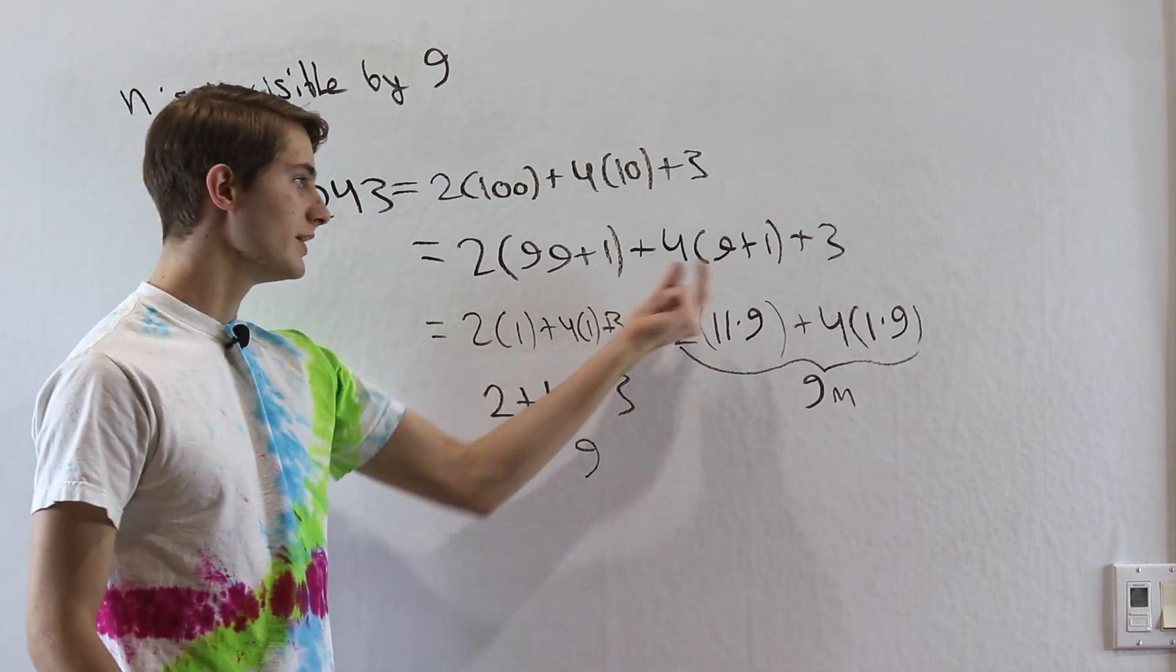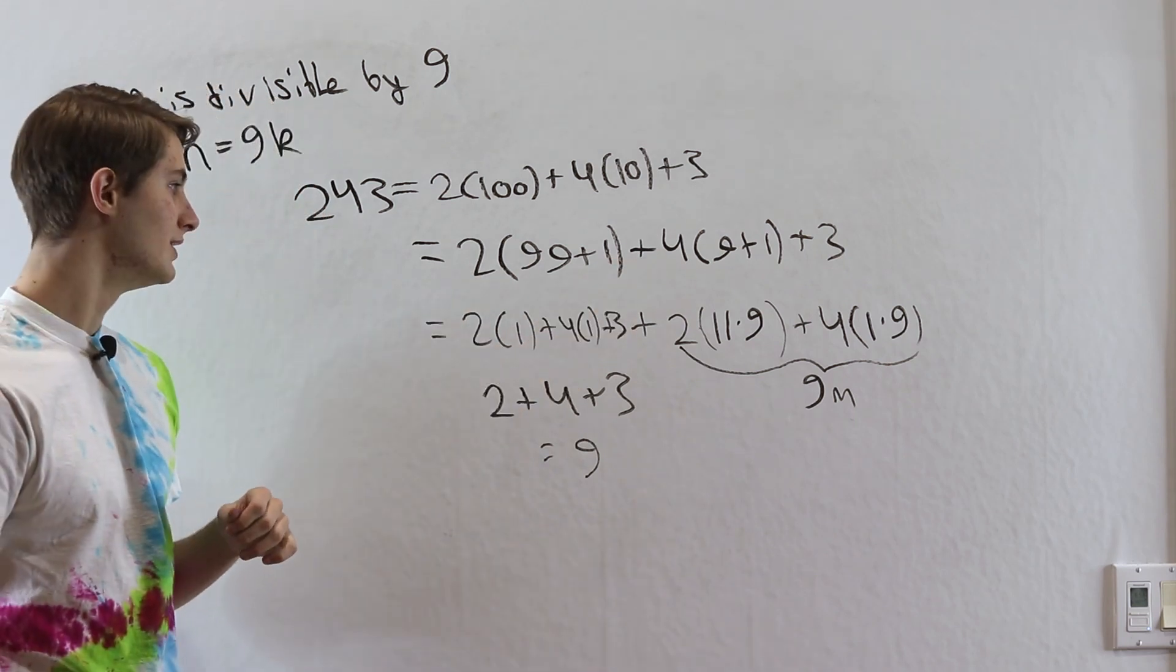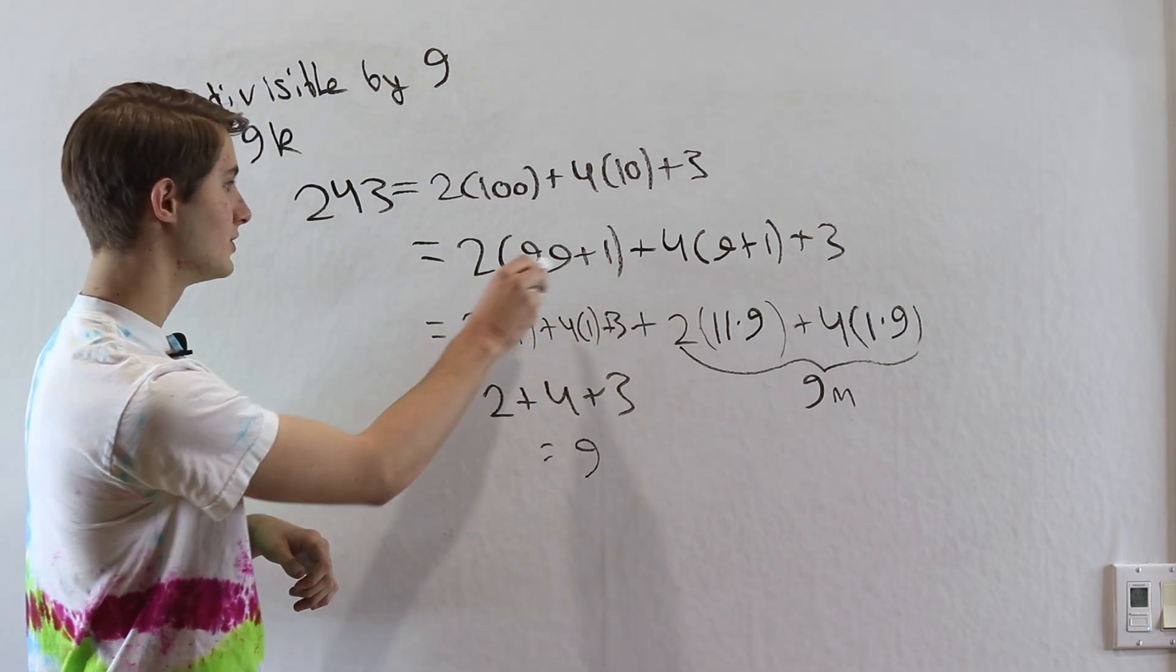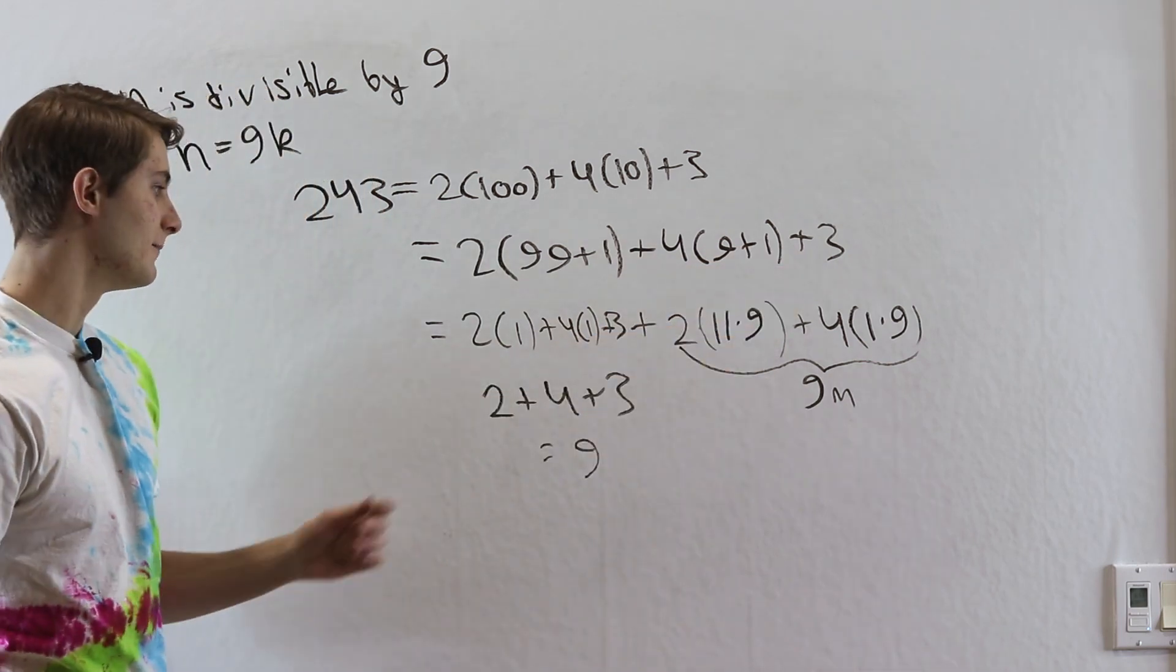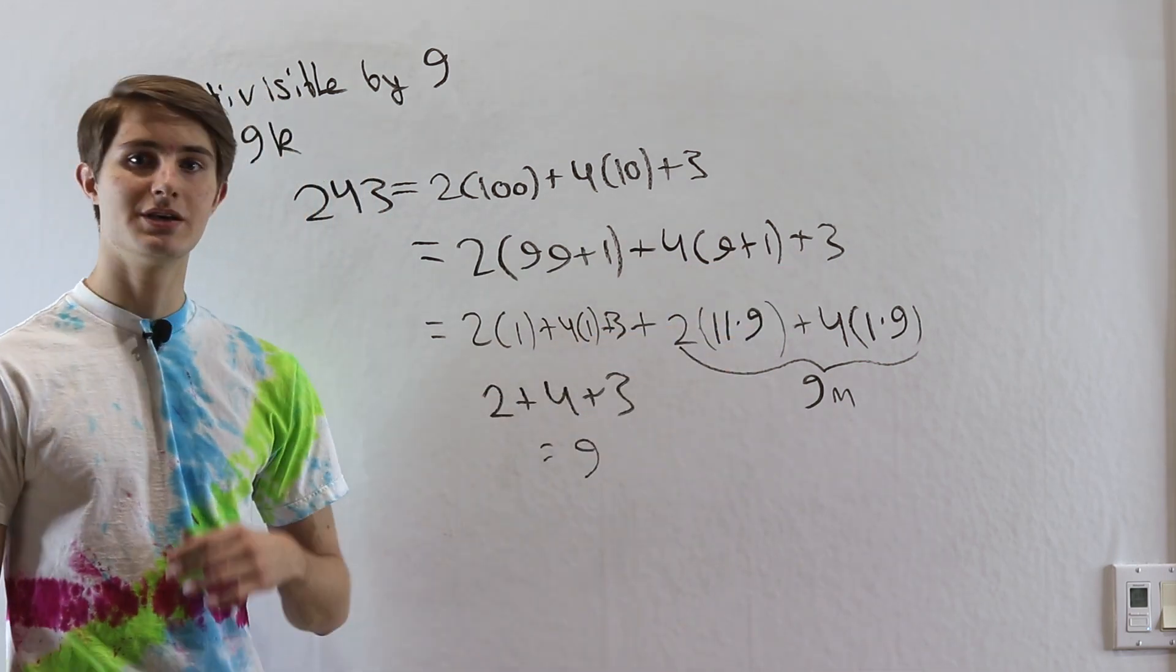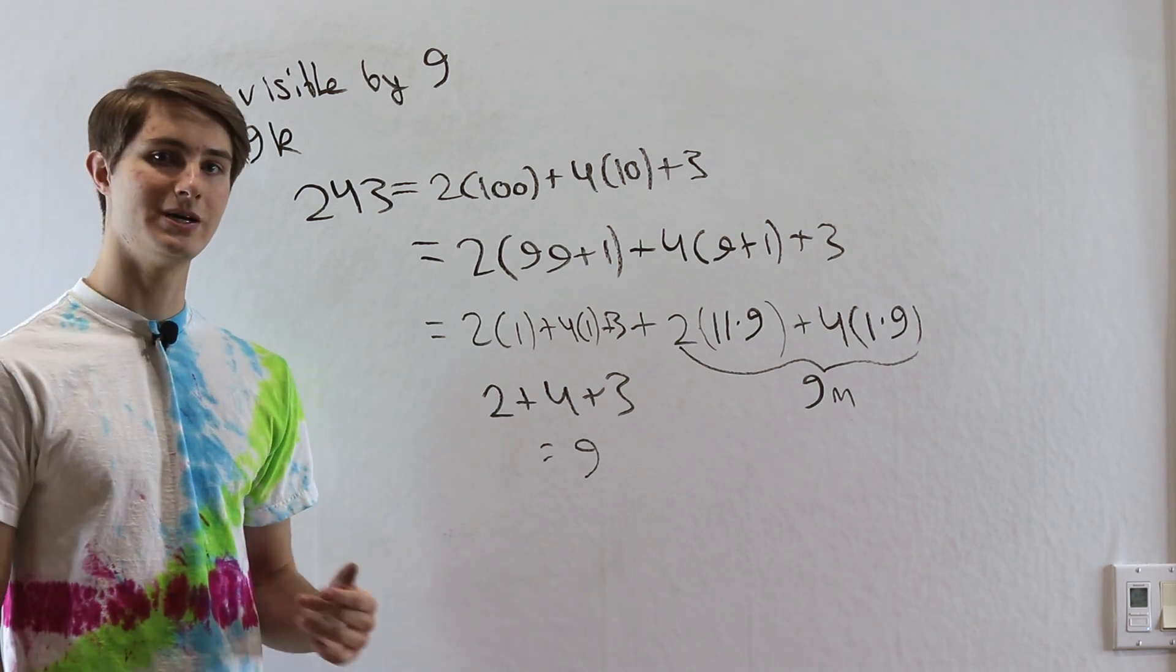So we can always take that part out of our equation, and we're just left with 2 times 1, 4 times 1, and our ones place digit there. We can add up those digits, and it will give us the exact same answer for whether our number is divisible by 3 or 9.